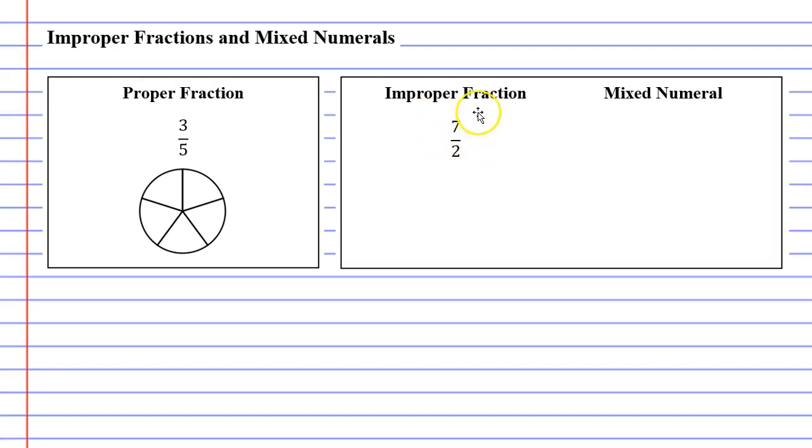Now if we look at our improper fraction here, 7 over 2, you'll notice that it's quite different to the other fractions we have been showing you. It's different because the number on top is bigger than the number on the bottom.